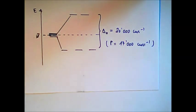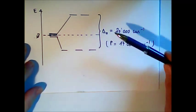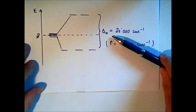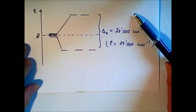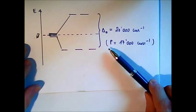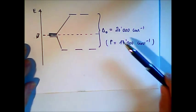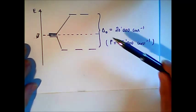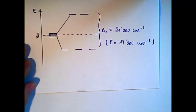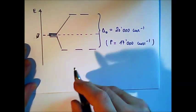Now in our energy diagram we can express both delta-O and the pairing energy in centimeters minus 1. For example, delta-O in our case would be 20,000 and the pairing energy 17,000 cm⁻¹. With this information from the experiment, we can calculate the crystal field stabilization energy in cm⁻¹ and compare high spin and low spin configurations.